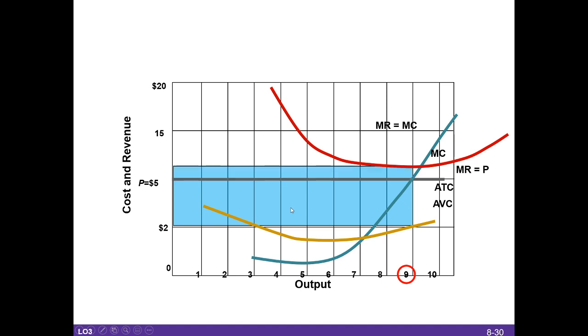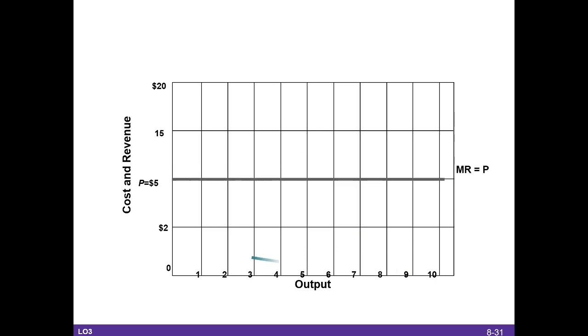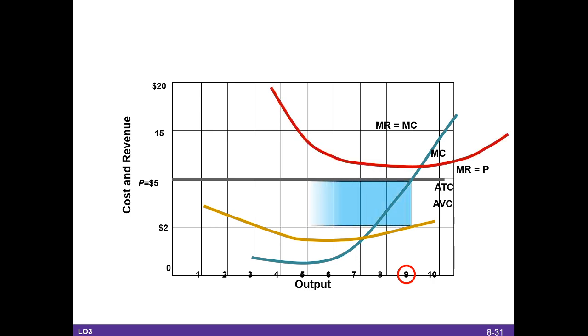Now, if I didn't produce, let's go back a sec. If I don't produce, I lose the whole blue square. If we don't produce, we lose the whole blue rectangle. If we do produce, we only lose the red area here. So this area down here is being covered by the revenue. But the revenue is not going to cover all of the cost, but it will cover a majority of the fixed cost.